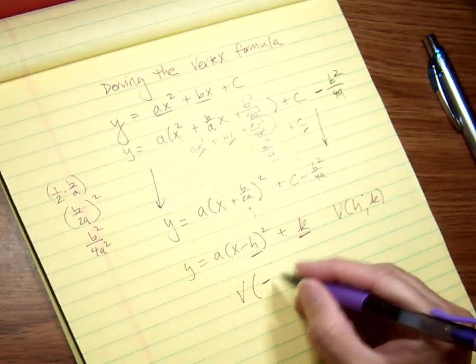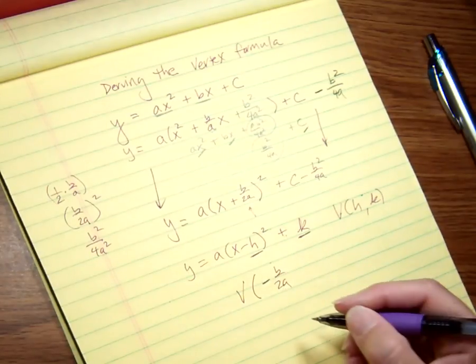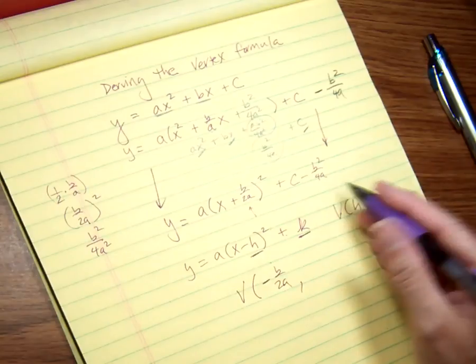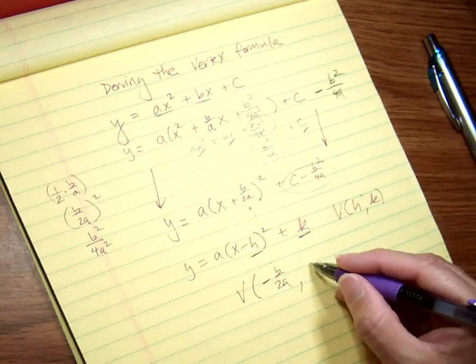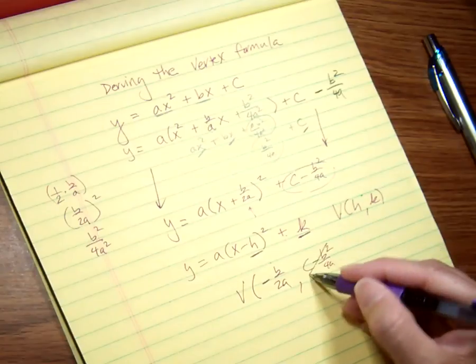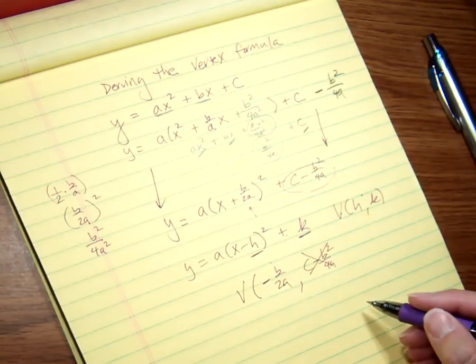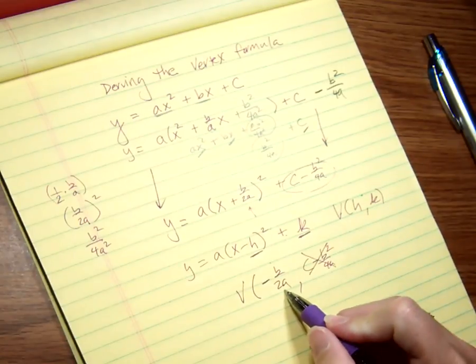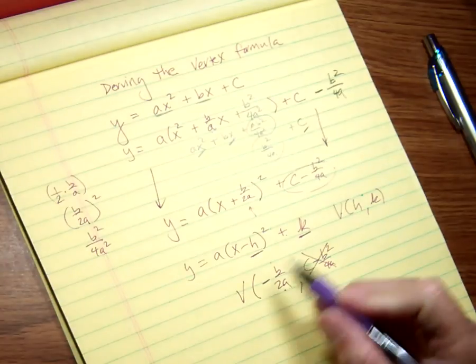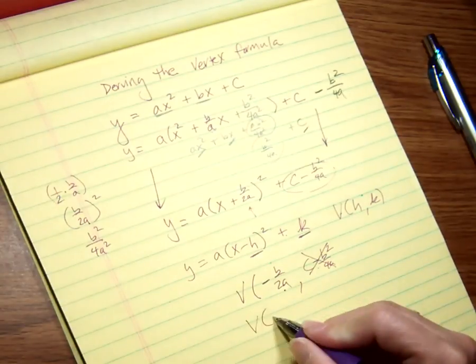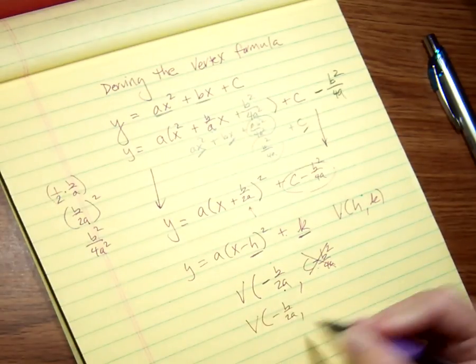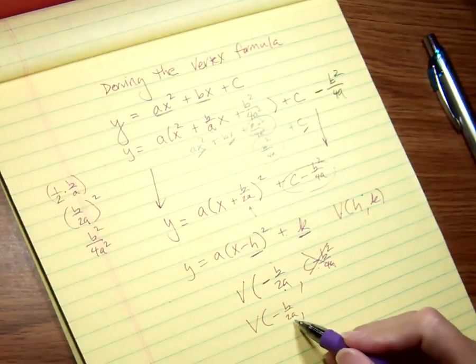So now that I have it sort of in that form, I know that my vertex is the opposite of this number, which is really -B/2A. And then the same as the rest of this stuff, but rather than remembering all the rest of that stuff, what I'd rather do is figure out what my x value is and plug it in.